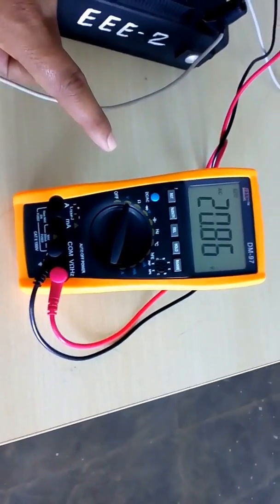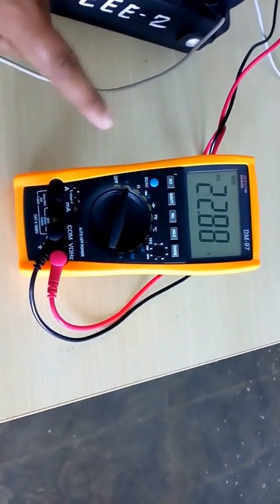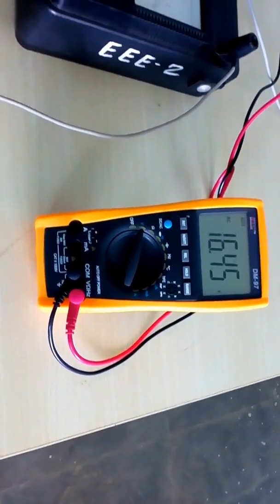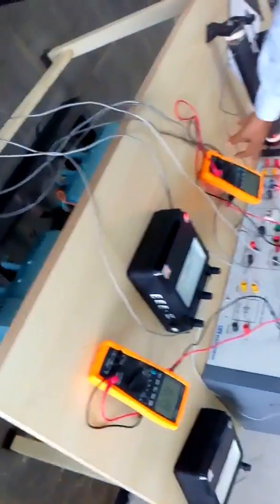And this is the voltage across the field which is also oscillating. So we need to note down these two values for a particular stator voltage. Stator voltage is 54.7.